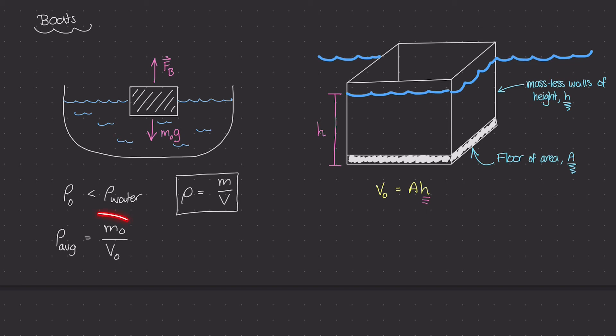Well, if we're looking at this relationship, we know that the average mass density of the boat equals the mass of the boat divided by the volume of the boat. The volume of the boat equals A times h, so I can rewrite this as m₀ divided by A times h.